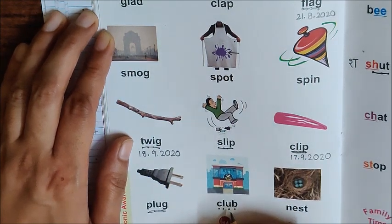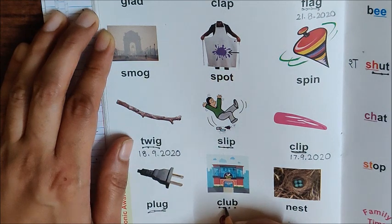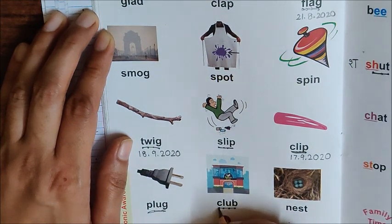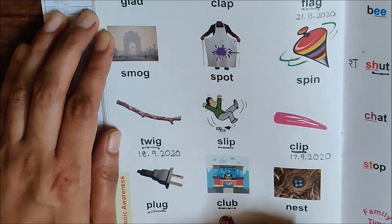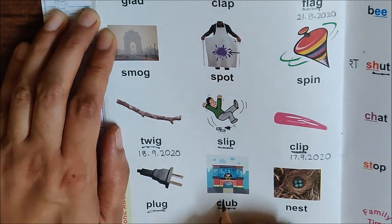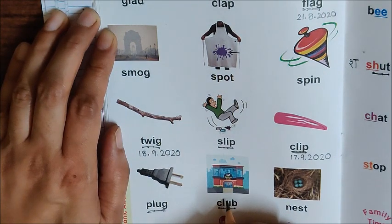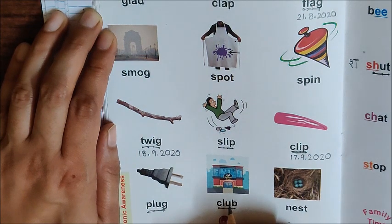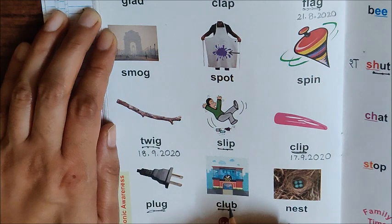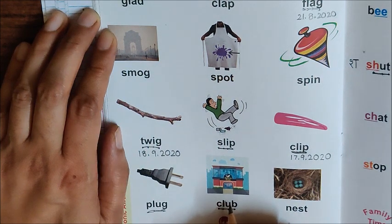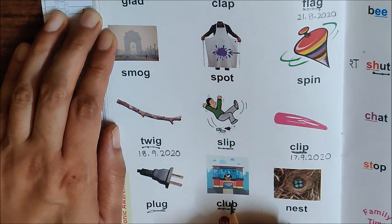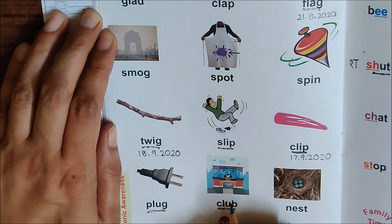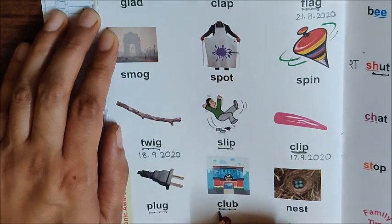Now time to join the sounds and read the word. C, L, U, B, Club. What is a club? Club is a place where you can do a lot of activities. There is a sports club where you can do swimming and play many games like playing badminton, playing lawn tennis, playing table tennis, playing football also. We have a sports club for such activities. Children, as we have done reading of this new word today, so write down here today's date.